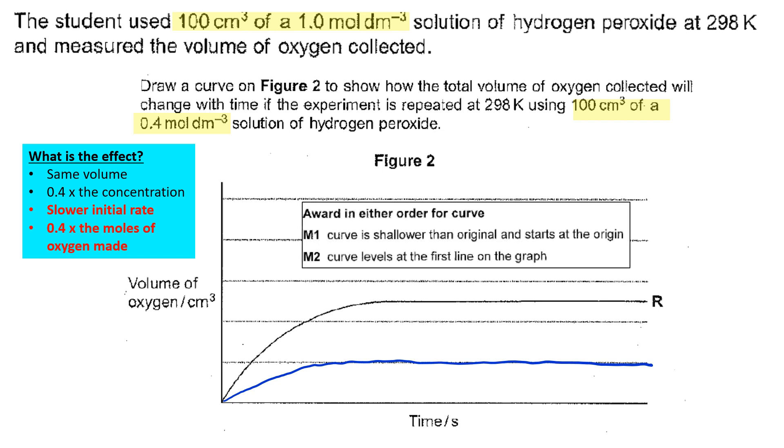Therefore, what they're looking for is the curve is shallower than the original and starts at the origin. The curve levels off at the first line of the graph, which is 0.4 times where R is leveling off on the y-axis. If you have a look at this point here, that's 0.4 at this point here.